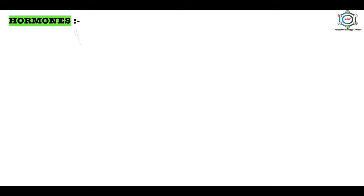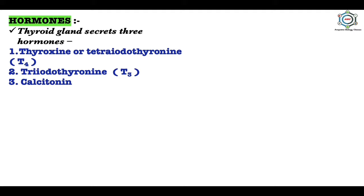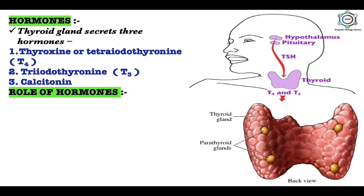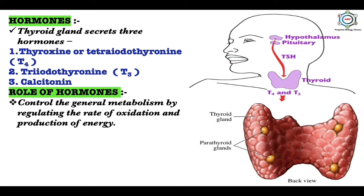The thyroid gland secretes three hormones: first, thyroxine or tetraiodothyronine (T4); second, triiodothyronine (T3); and third, calcitonin. In the picture you can see the thyroid gland and the four parathyroid glands present on it, two on each side. The hypothalamus activates the pituitary to release thyroid-stimulating hormone, which in turn activates the thyroid gland.